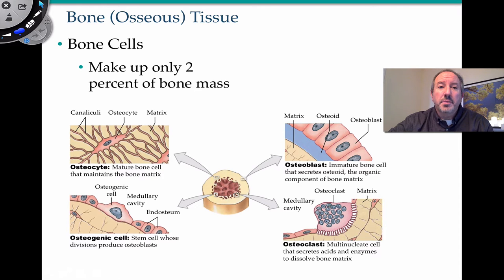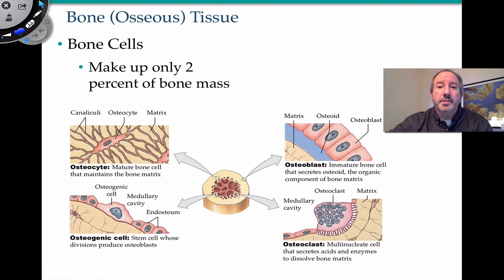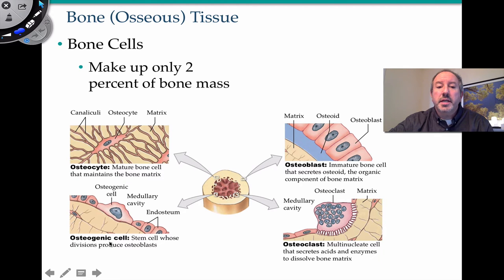Now I want to focus on some bone cells. The cells only make up 2% of the bone mass because the salts and collagen make up the majority. But the cells are really important because they lay down the matrix — they're the ones that build the matrix and also tear it down. The key bone cells are osteocytes, osteogenic cells, osteoblasts, and osteoclasts.